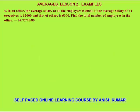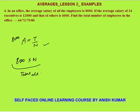Next is a different kind of question. There is a variety of questions — although the concept is the same, the variety is different, which is why I am discussing this. The question says: in an office the average salary of all the employees is 8000. Average salary of 24 executives is 12000, and that of others is 6000. Find the total number of employees in the office. We don't know how many employees there were. Again, the only concept is average = total/n. We know the average salary is 8000 but we don't know n, so total salary of all employees is 8000 × n.